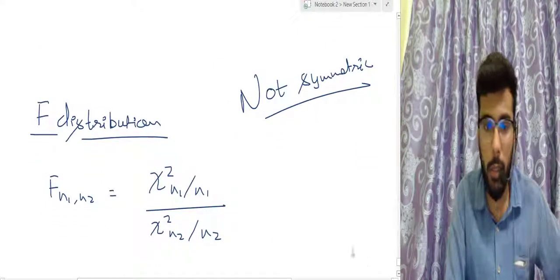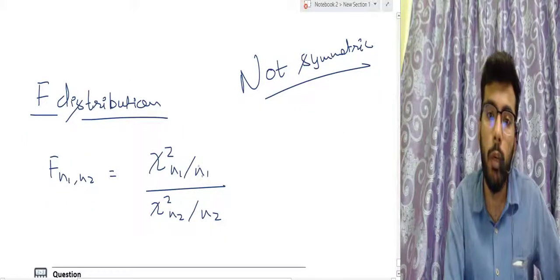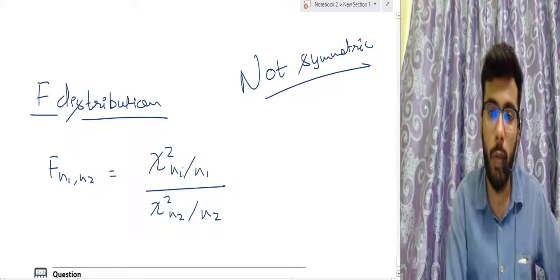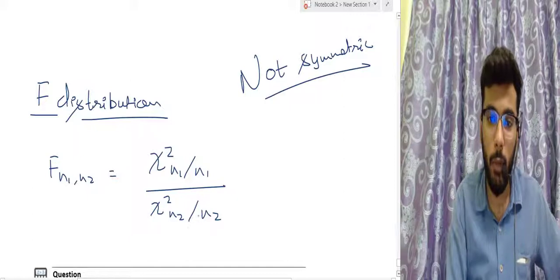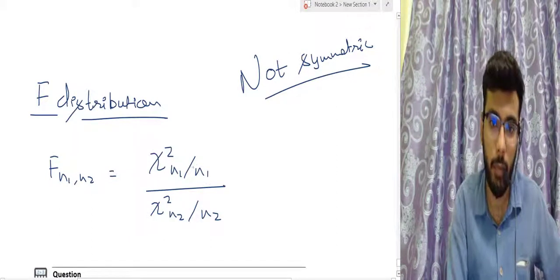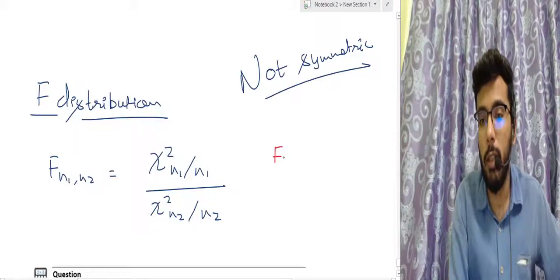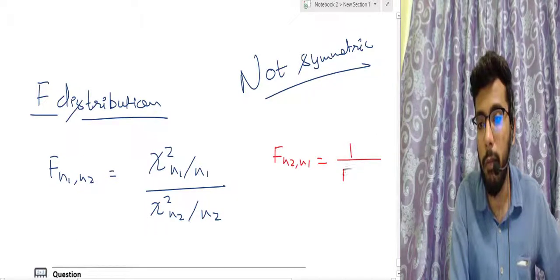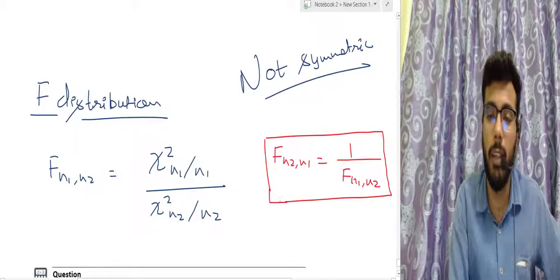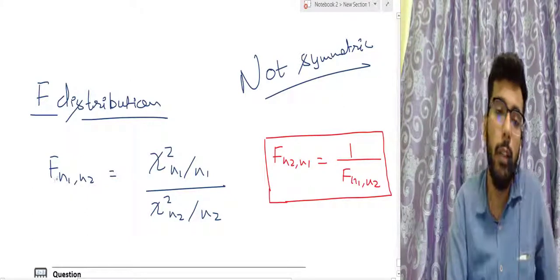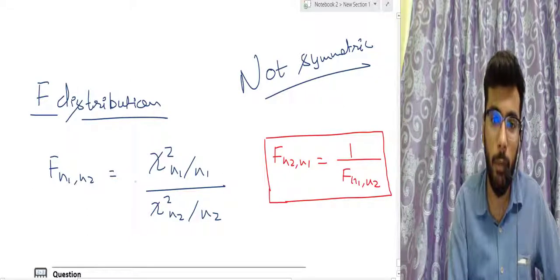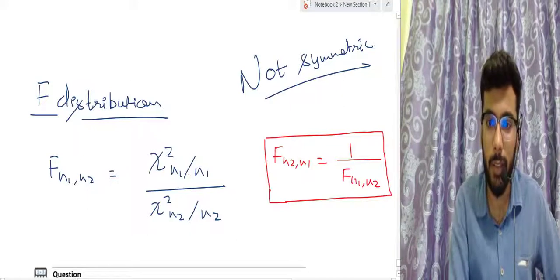The next distribution is the F distribution — it is a ratio of two chi-square distributions divided by their respective degrees of freedom. F(N1, N2) equals chi-square(N1)/N1 divided by chi-square(N2)/N2. It is not a symmetric distribution, just like the chi-square. An important property: F(N2, N1) equals 1 divided by F(N1, N2). This distribution is used extensively in confidence intervals and hypothesis testing.